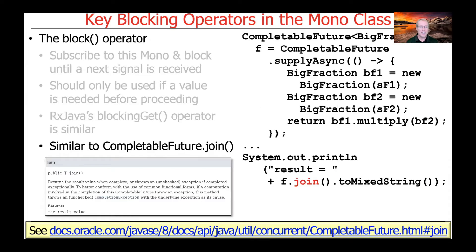There's actually a similar operation in Java's CompletableFutures framework as well — that's the join method defined on the CompletableFuture class. As you can see here, we could do multiplication in the background using the CompletableFuture supplyAsync factory method, and then use the join operation to wait for the computation to run in the background. So all of these are variations on the same theme.